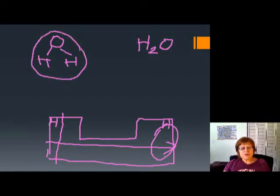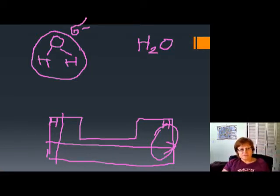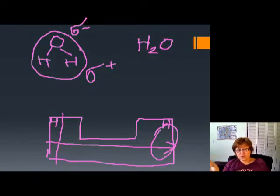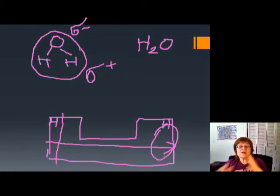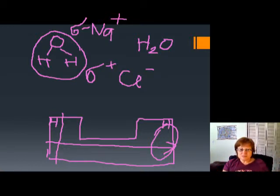In the water molecule, the shared electron pairs are drawn closer to the oxygen than to the hydrogen. So when you look at the molecule, there is a little more negative charge on the oxygen side — not a full charge but a partial negative, delta minus — and a little positive on the hydrogen side, delta plus. When you put salt in this water with its polar molecules, the salt breaks apart: the sodium ions go toward the negative oxygen side, and the chlorine ions go toward the positive hydrogen side. That is why ionic halite dissolves in water — because of those polar molecules.